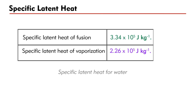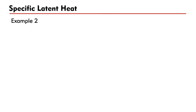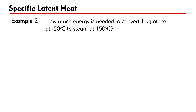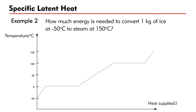The table below shows the standard values of specific latent heat of water. Let's find how much energy is needed to convert 1 kilogram of ice at minus 50 degrees Celsius to steam at 150 degrees Celsius. Before we do any calculation, let's draw the heating curve. It involves five stages.